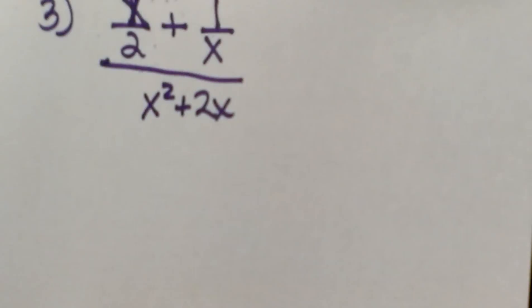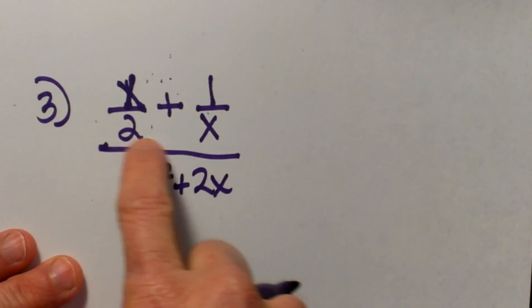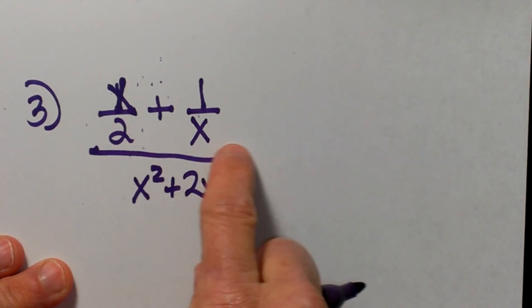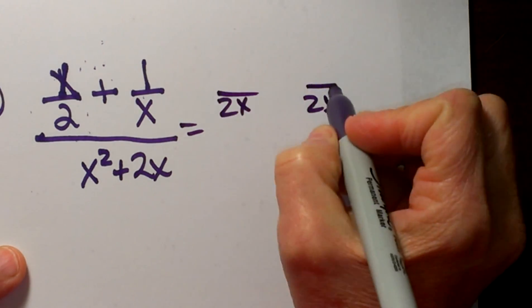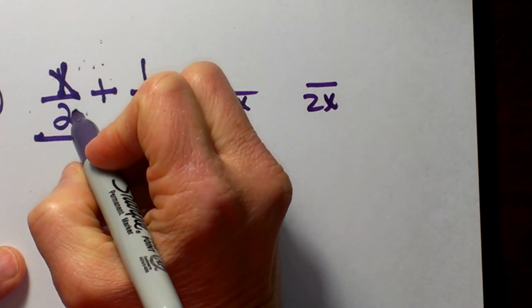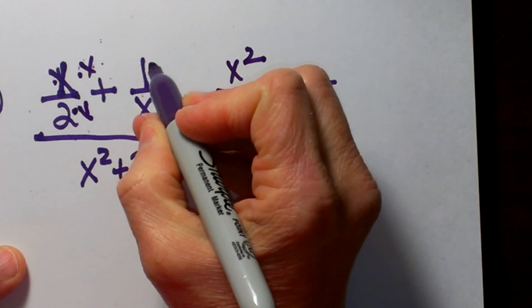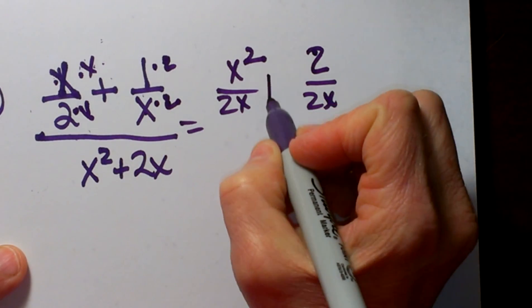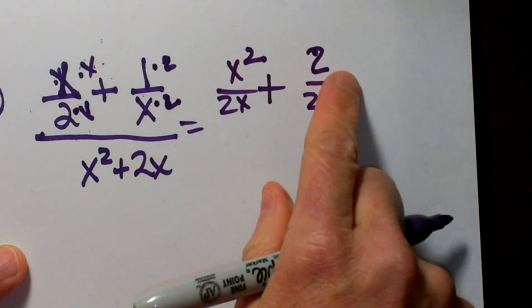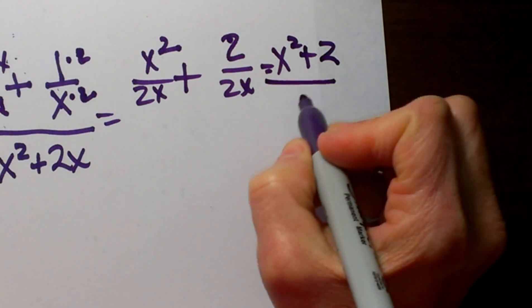Let's look at one more of these, but this time with some variables. This is kind of like the second one — we have to add the top fractions together before we deal with the bottom. So let's get a common denominator. For 2 and x our common denominator is 2x. I have to multiply the first term by x to get a denominator of 2x, and x times x gives me x squared. Then I multiply the other term by 2, so 2 times x is 2x. Adding those together gives me x squared plus 2 all over 2x on top.